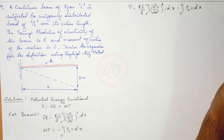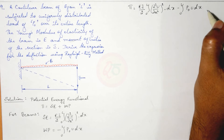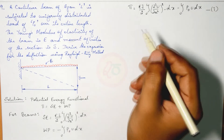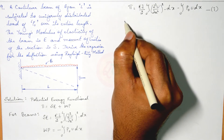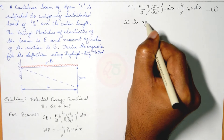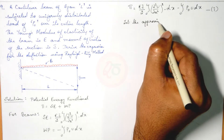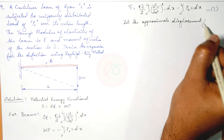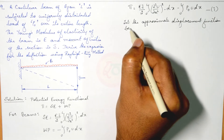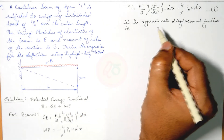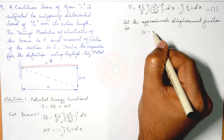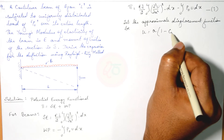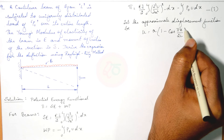The second step is to assume an approximate displacement function which satisfies the boundary conditions. We are assuming a trigonometric function, so u (displacement) equals A times (1 − cos(πx/2L)).